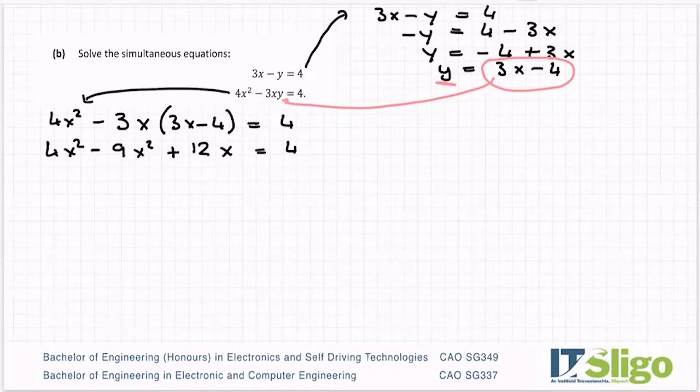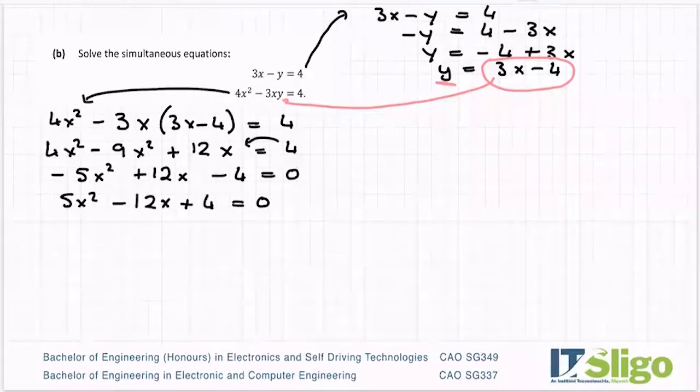I'm going to bring the 4 over so that it becomes minus 4 equals 0. Well, no, let me not do that. I'll do it on the next line. Equals 4. So now I have 4x squared minus 9x squared. So that's minus 5x squared plus 12x. Now I'll bring them over because I can see, I hope you can see now a quadratic forming. Let's change the sign all the way across again.